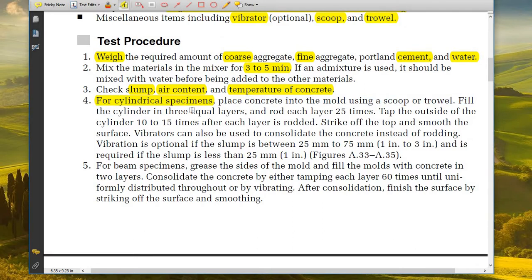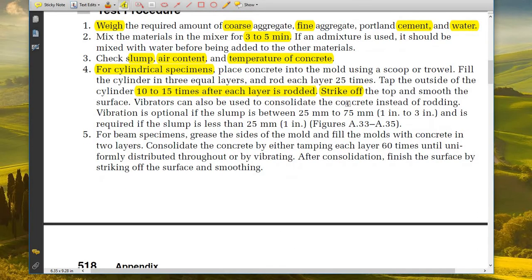For the case of cylinder specimens, place concrete into the mold using a scoop or trowel. Fill the cylinder in three equal layers and rod each layer 25 times. Tap the outside of the cylinder five to ten times after each layer is rodded using a mallet. Strike off the top and smooth the surface.